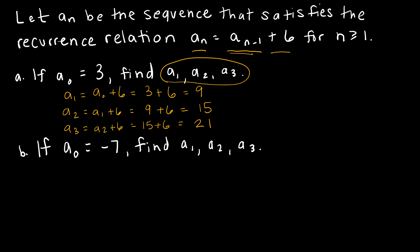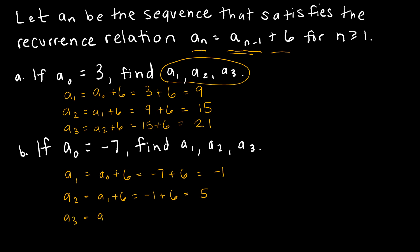Now let's look at if a sub zero was negative seven. Same recurrence relation. A sub one would be a sub zero plus six, which is negative seven plus six, giving me negative one. A sub two is a sub one plus six, which is negative one plus six, which is five. A sub three, the third term, would be the second term plus six, which is five plus six, or 11. The common difference was six in both cases — the only difference is the starting point, three or negative seven.